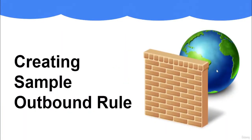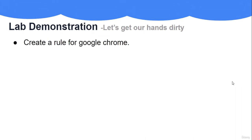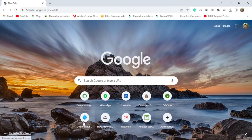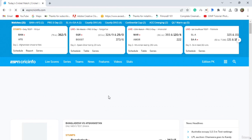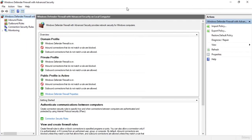Hello everyone, welcome to this tutorial on creating a sample outbound rule in Windows Firewall. Let's say we want to block all connections with Google Chrome and don't want to use Google Chrome to access the internet. We can create a firewall rule that blocks all internet access from Google Chrome. But before we start, let's check that Google Chrome is accessing the internet — and yes, it is currently connected. So let's go back to our firewall and go to the outbound rules.